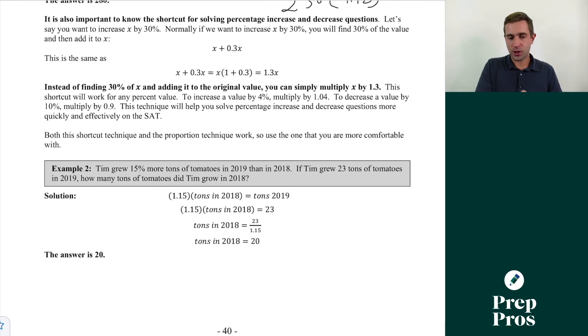For our second example, we're going to see what we can always think of as a percent reversal, where we are undoing the percent change that already happened. Here we see Tim grew 15% more tons of tomatoes in 2019 than in 2018. So really conceptually, 2018's amount times 1.15, that's going to be our one plus or minus the percent, and since it's 15% more, we're doing 1.15, is going to equal the amount he grew in 2019.